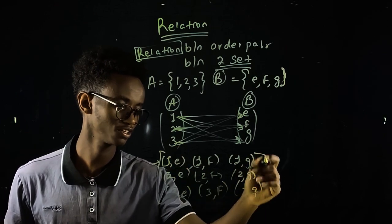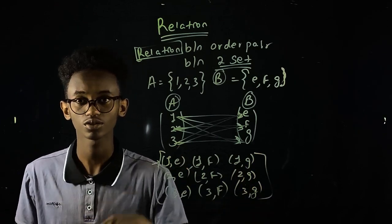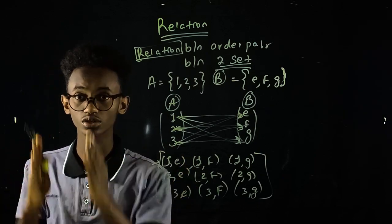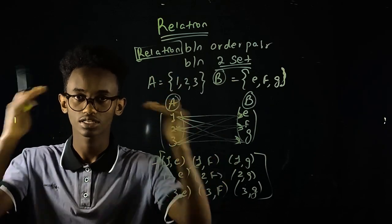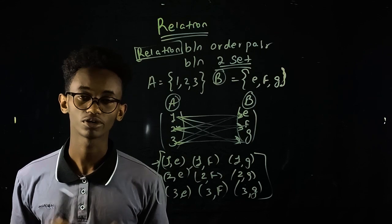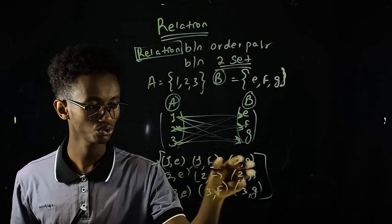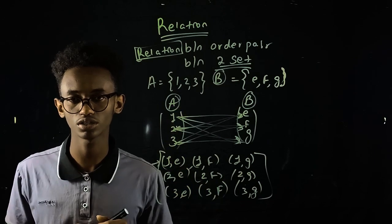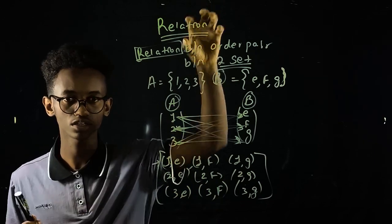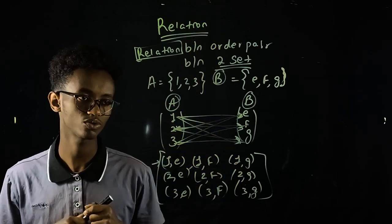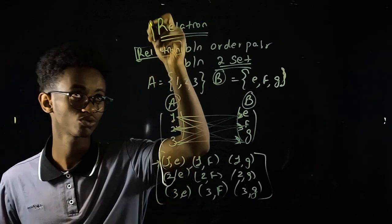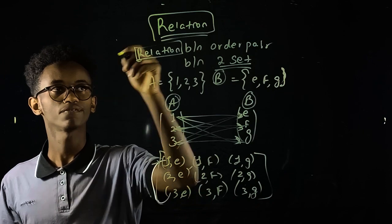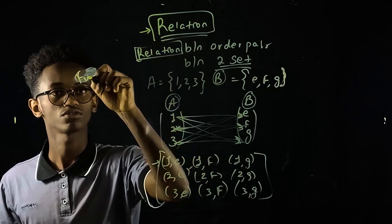The definition of a relation — and for each pair, we check whether it satisfies the condition. Going through multiple ordered pairs, we determine whether each pair belongs to the relation or not.